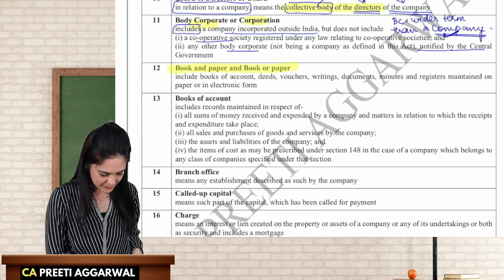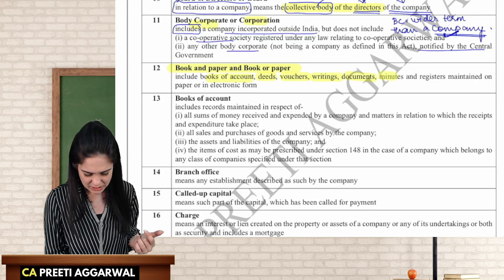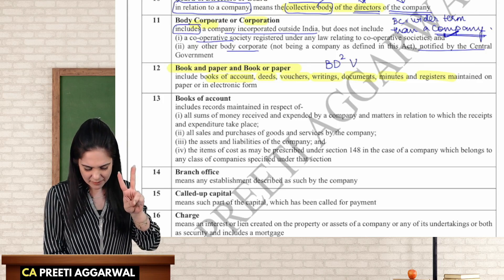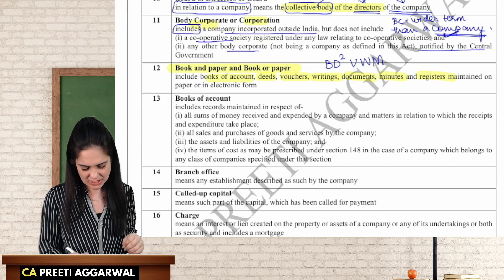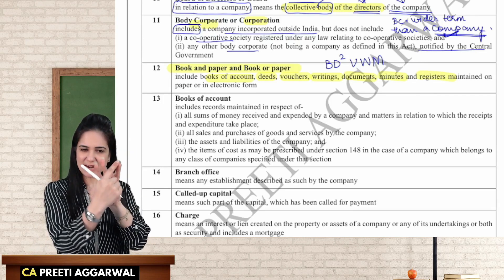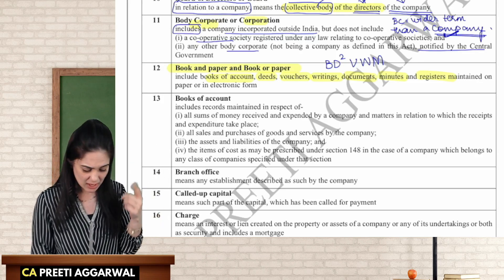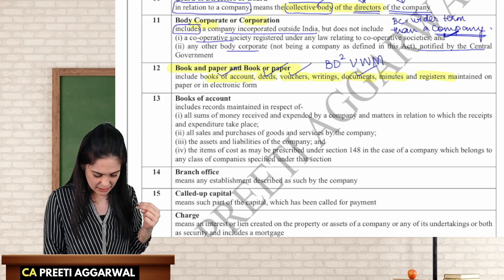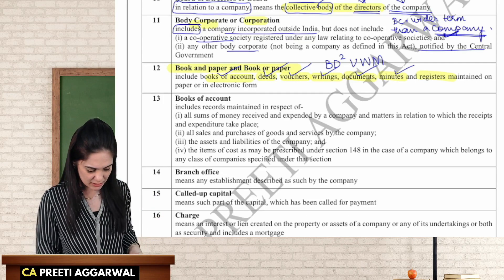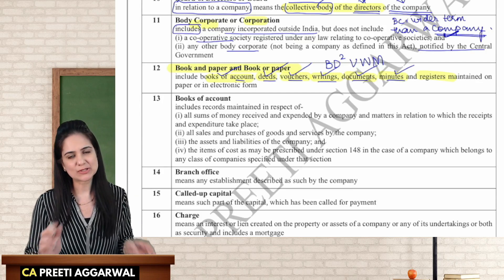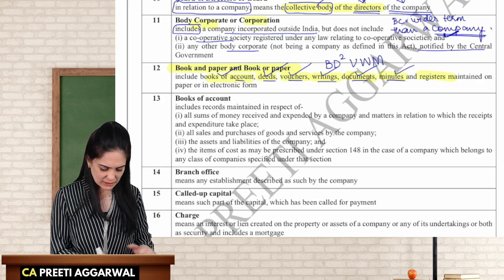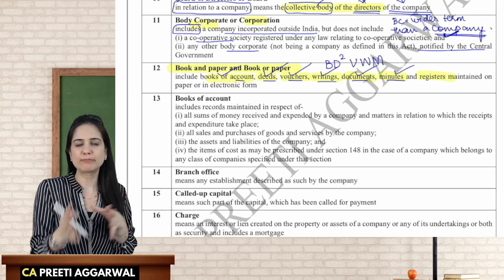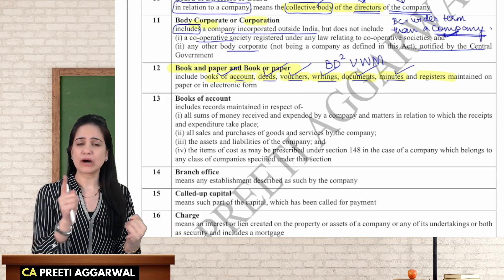Book or paper — it includes books of accounts, deeds, vouchers, writings, documents, minutes, and registers. The mnemonic is B-D²-W-M: write a V, add another V to make W, then inverse it to make M. So B is books of accounts, D is deeds, D is documents, V is vouchers, W is writings, M is minutes. You maintain these either in physical or electronic form. Books of accounts: the keywords are money received, money expended, sales, purchase, asset, liability, and cost. Certain companies are required to maintain cost records under Section 148 as specified by the central government.